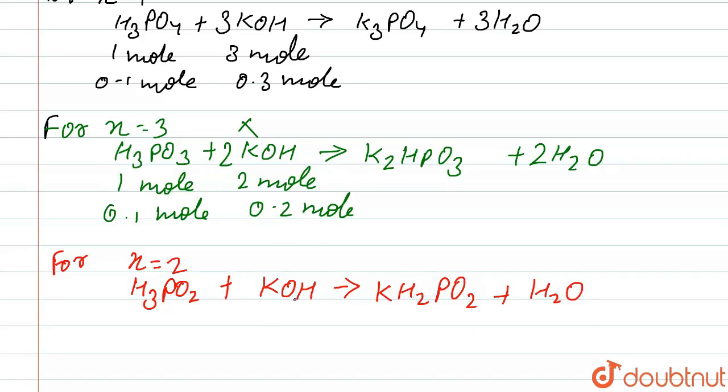Here, 0.1 mole of H3PO2 reacts with 1 mole of KOH, it gives KH2PO2 plus H2O. Here, 0.1 mole of H3PO2 reacts with 0.1 mole of KOH to completely neutralize.